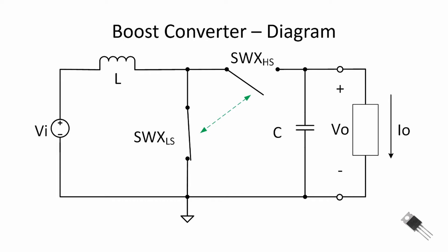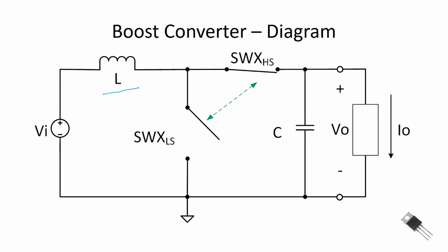Schematically, we can look at that with just a switching arrangement. When the low side switch is closed, current flows through the inductor and we build up a magnetic field. When we open the low side switch and close the high side switch, current — which cannot change instantaneously through an inductor — will flow to the load as output. We switch the low side with a duty cycle of D, so its on-time will be D times T_s.